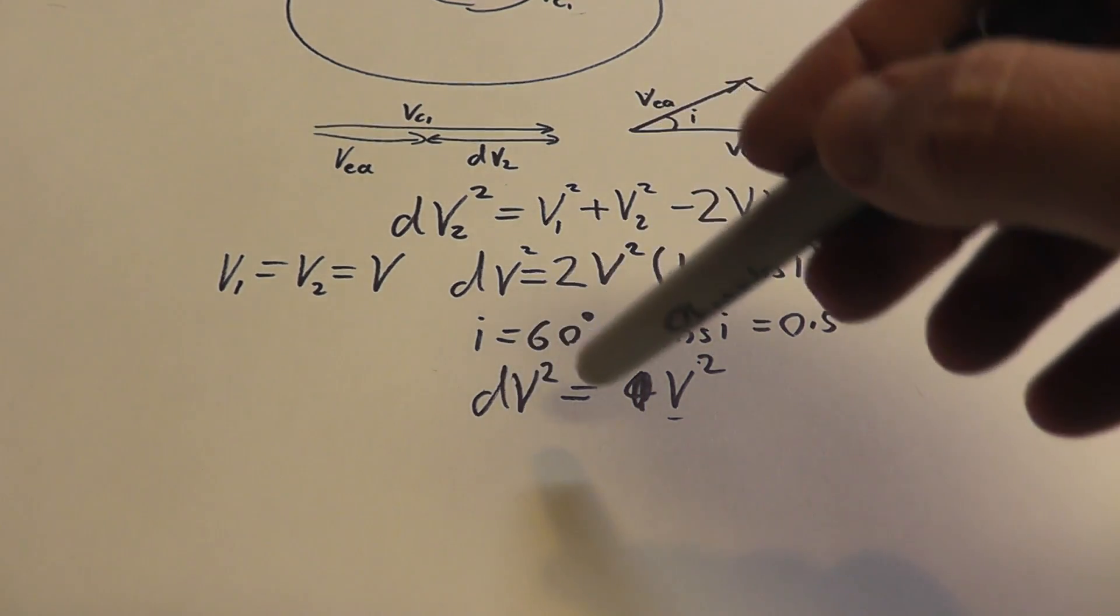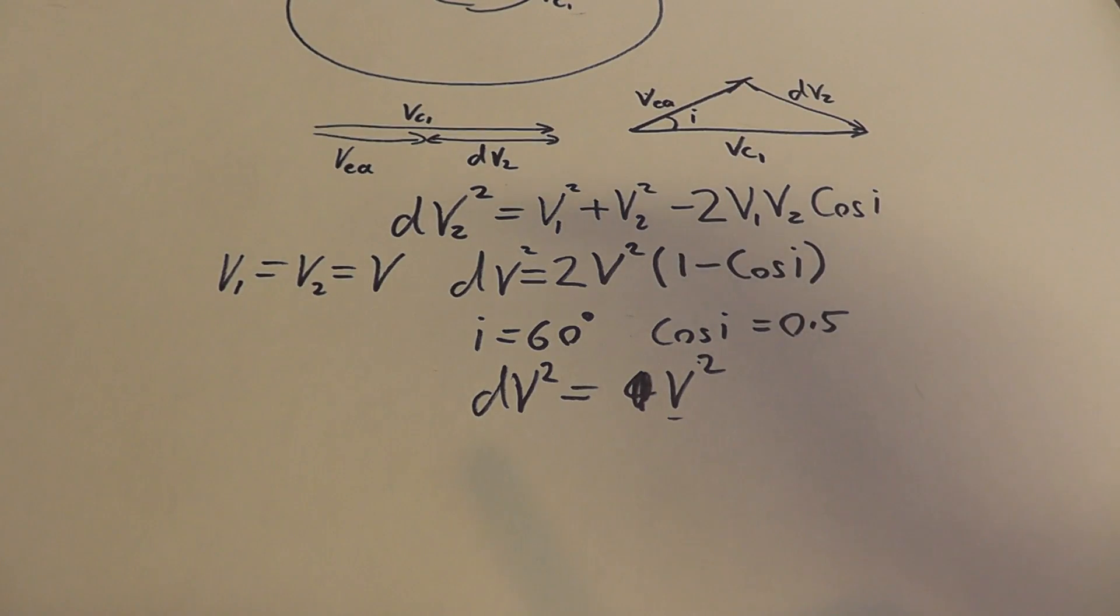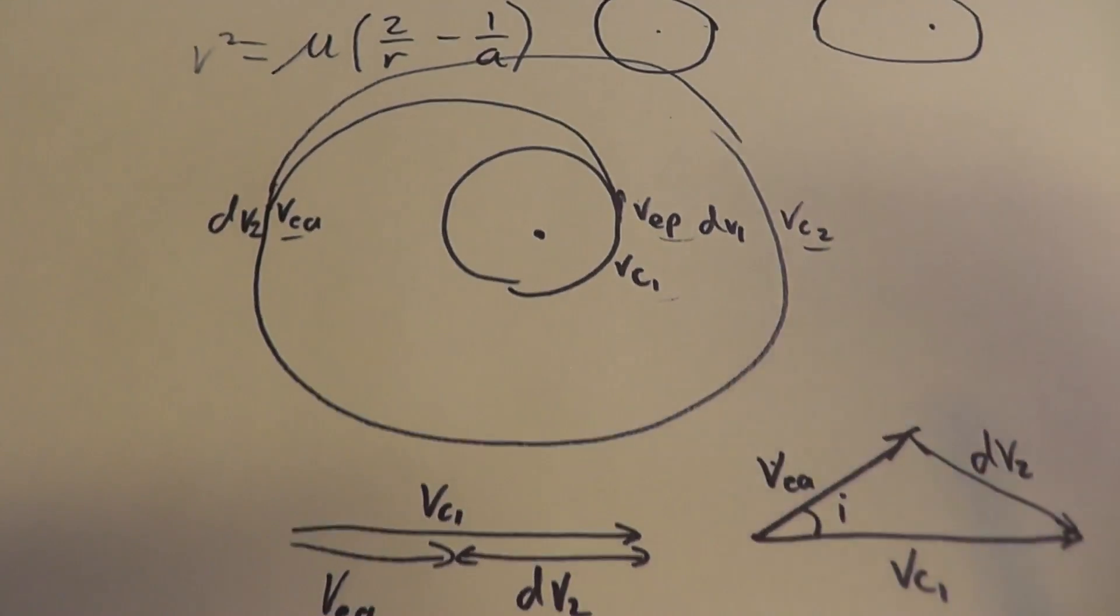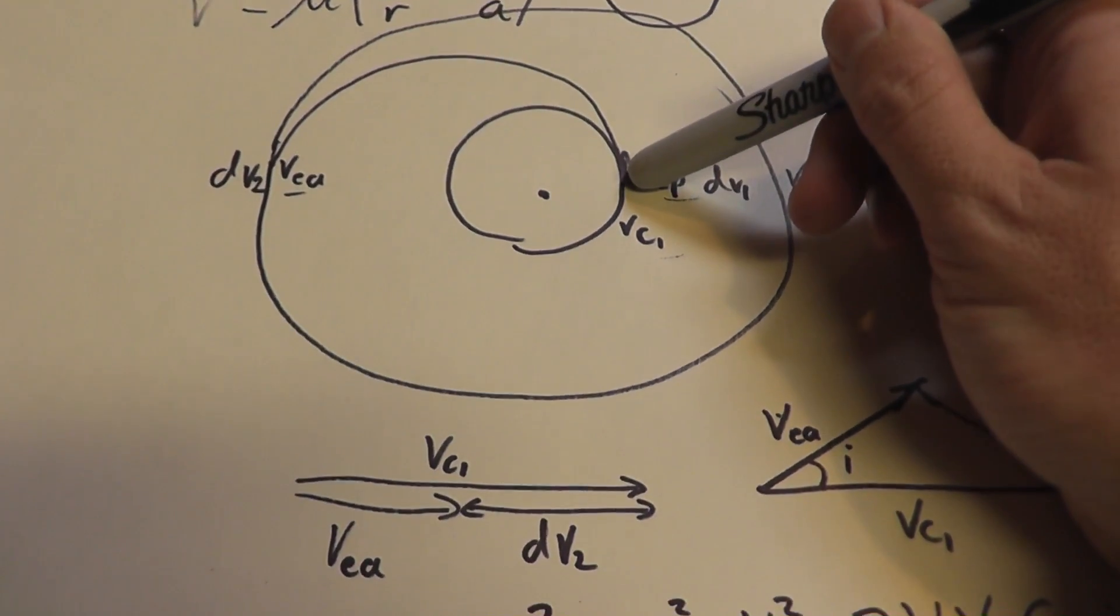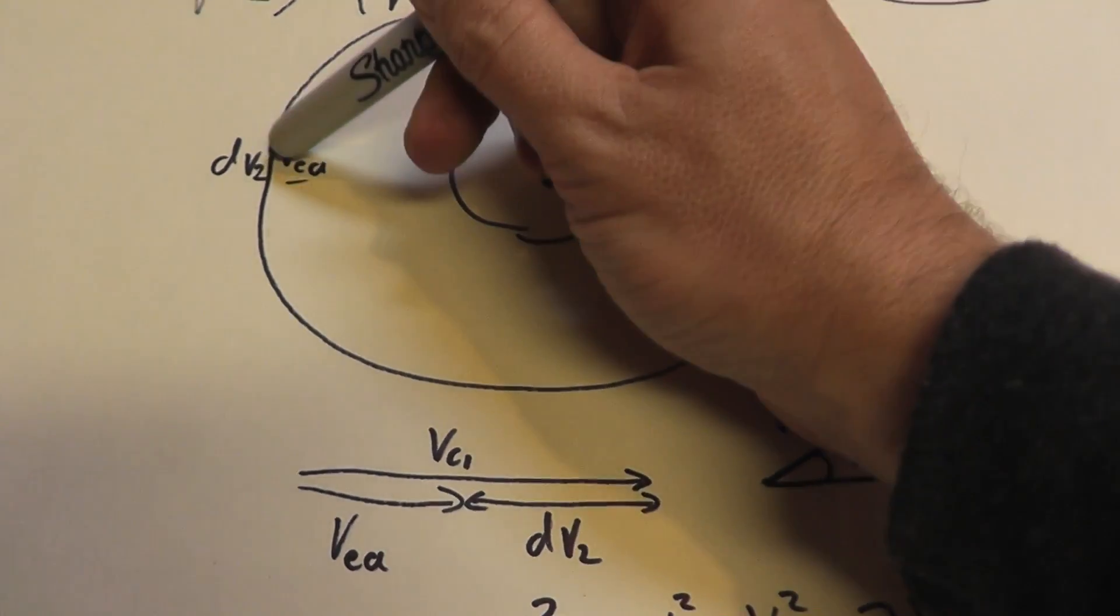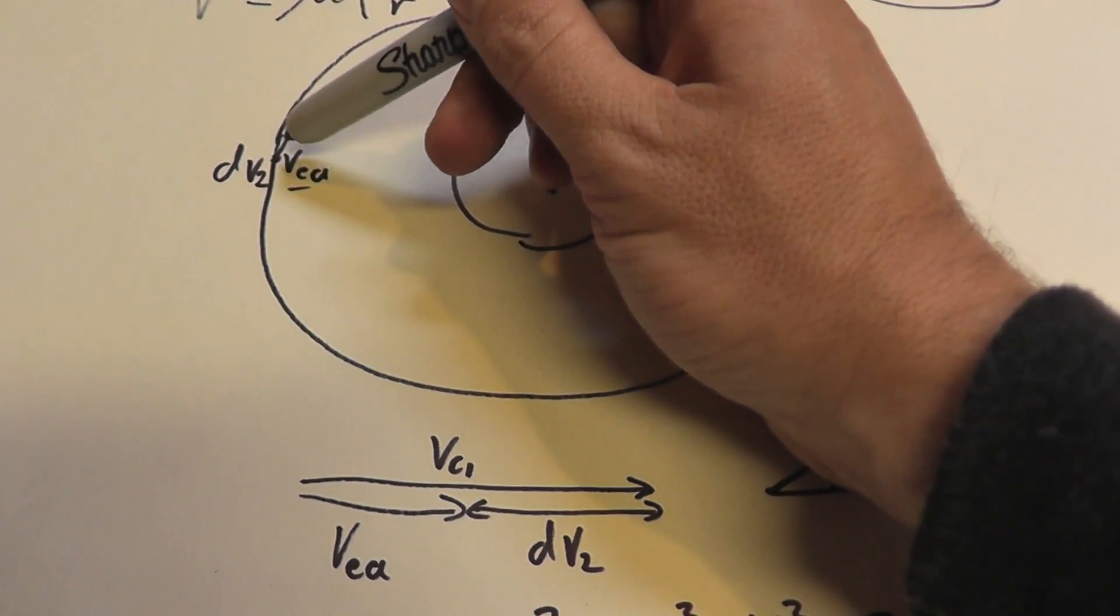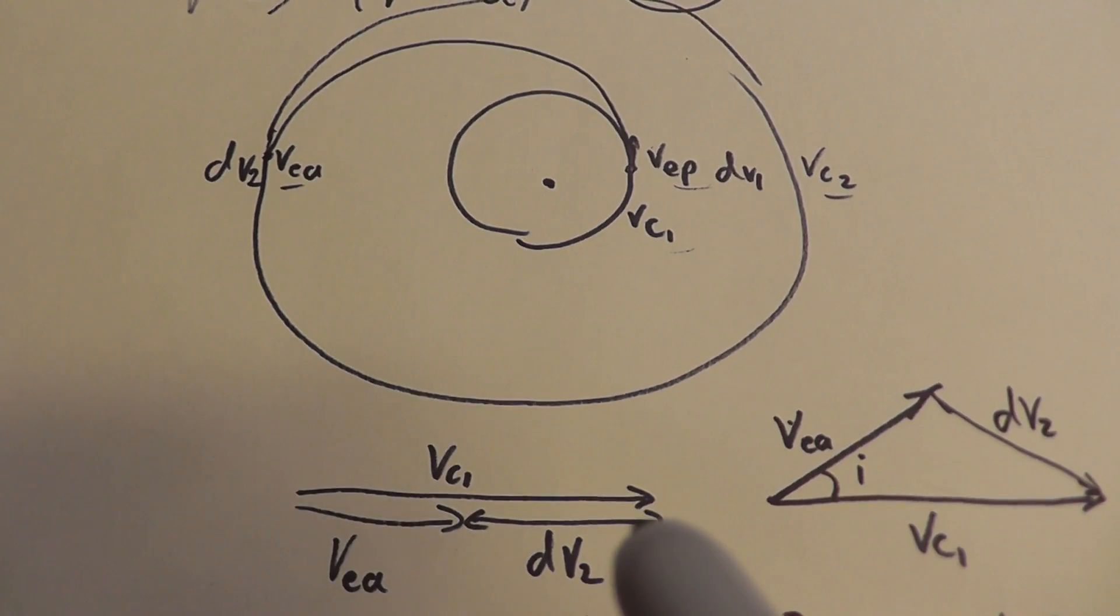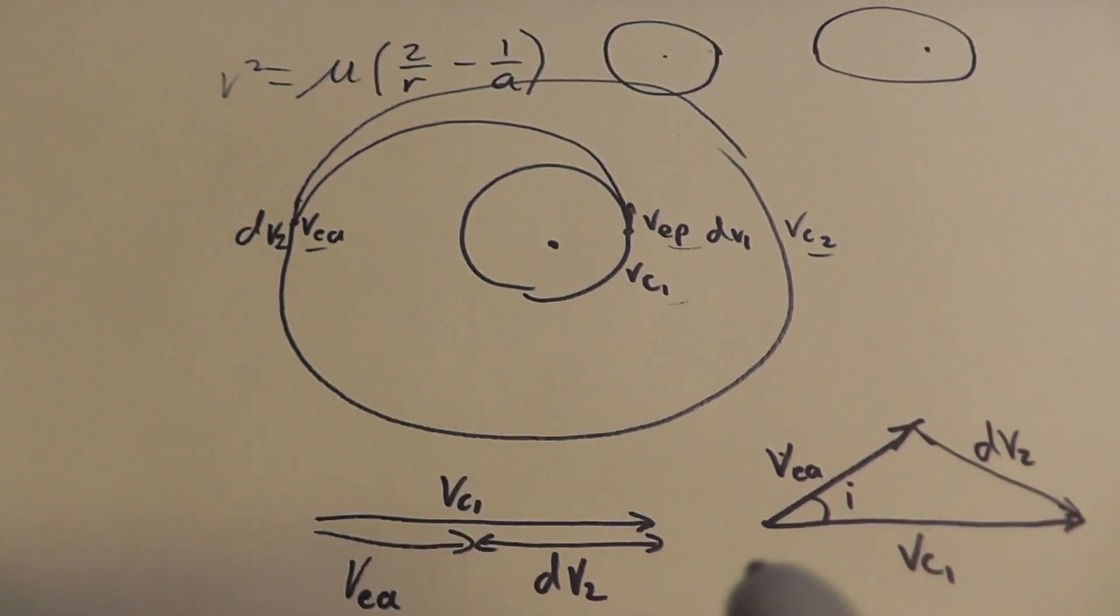Your delta v for making an inclination change entirely is strongly dependent on your initial velocity. So, if you are in an eccentric orbit and you want to make an inclination change, it's best to do it here because you're moving more slowly compared to here, where you will have to expend more fuel to make that inclination change.